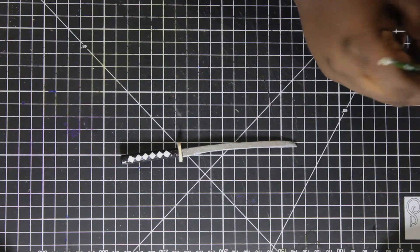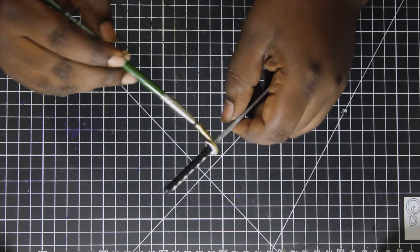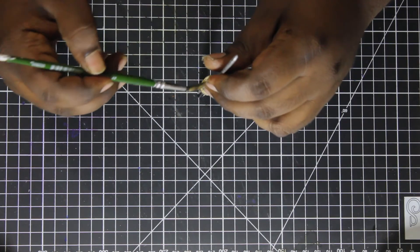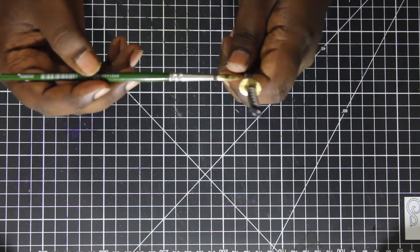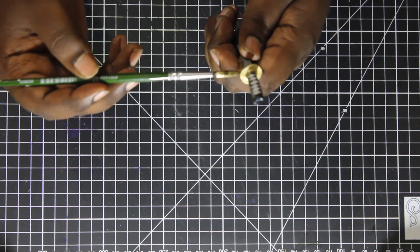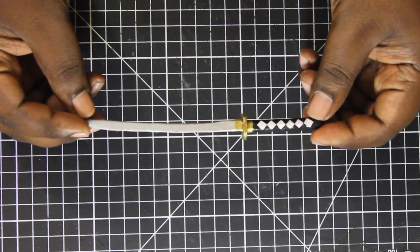Now paint the guard with gold paint. The mini katana is ready now.